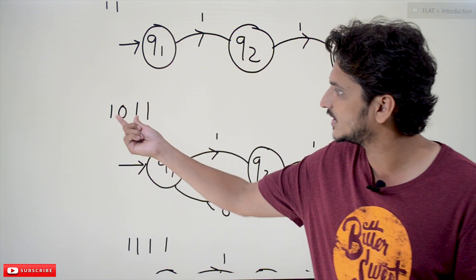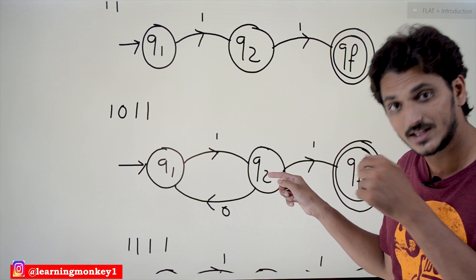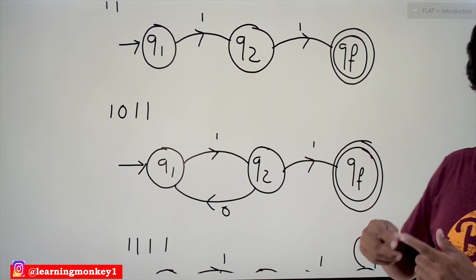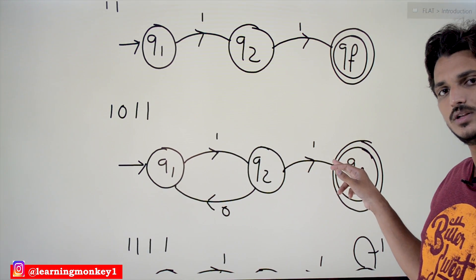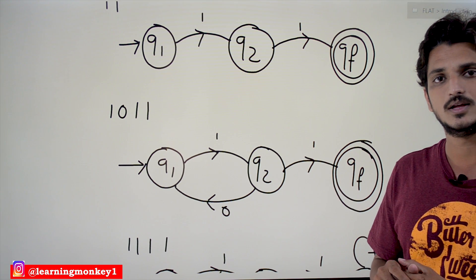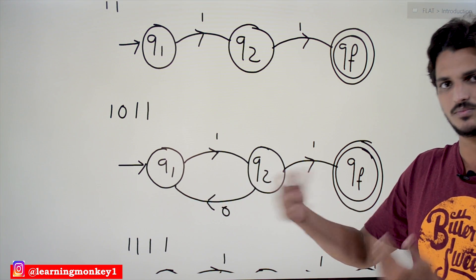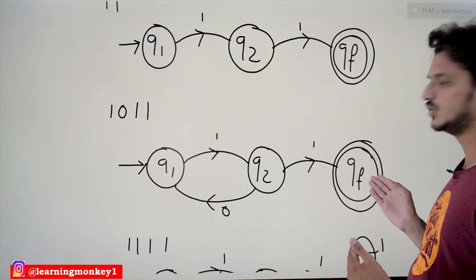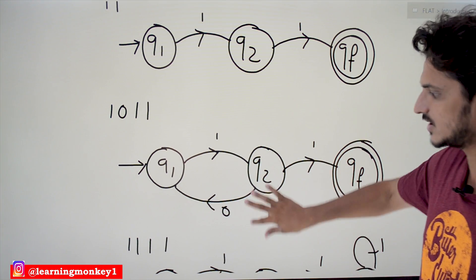We move back to q1 because whenever we are in q2 and find the input symbol zero, we lost the essence — we lost the consecutive-ones track. So for the next characters we have to again check from the beginning: two consecutive ones, if they are at the end then accept, otherwise don't accept. That's why whenever we find zero on q2, we again move to q1 and check the next symbols.